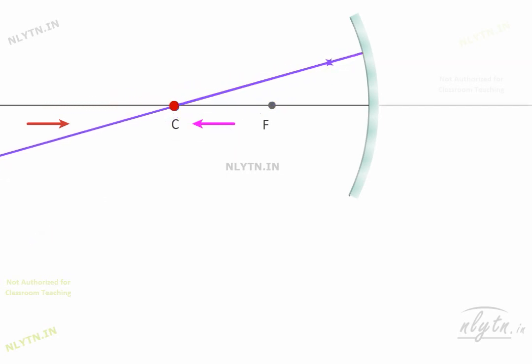When the object is at the center of curvature, the incident ray is normal to the mirror at this point and thus is reflected back to retrace its path. Thus, the image is also at the center of curvature.